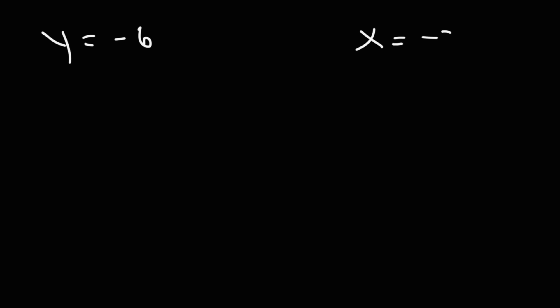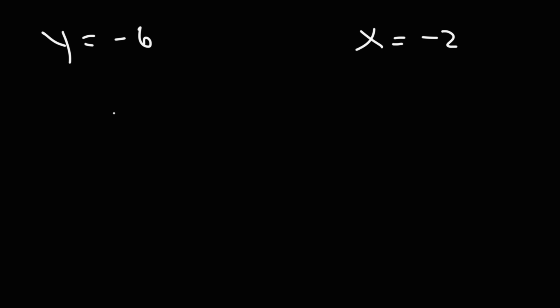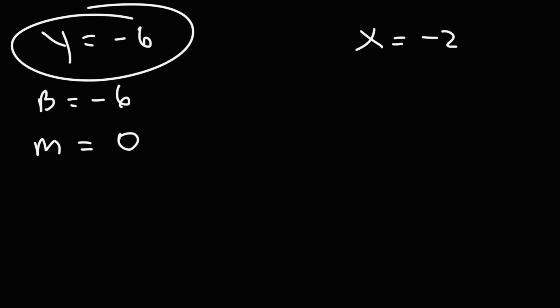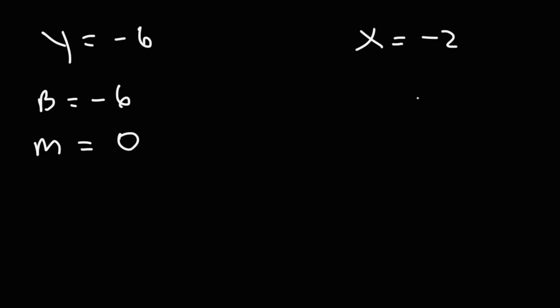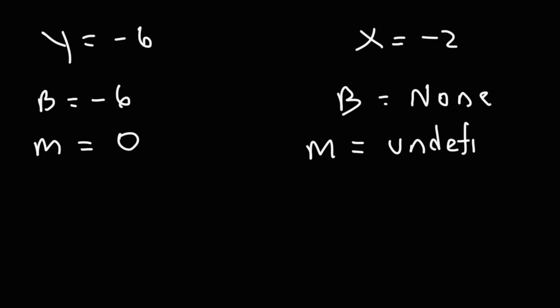Let's say we have y equals negative 6 and x equals negative 2. Whenever you have y equal to some number, whether positive or negative, the y-intercept is going to be whatever y equals, and the slope is always going to be 0 for this kind of line. Whenever you see x equals a number, the slope is going to be undefined and the y-intercept is nothing.